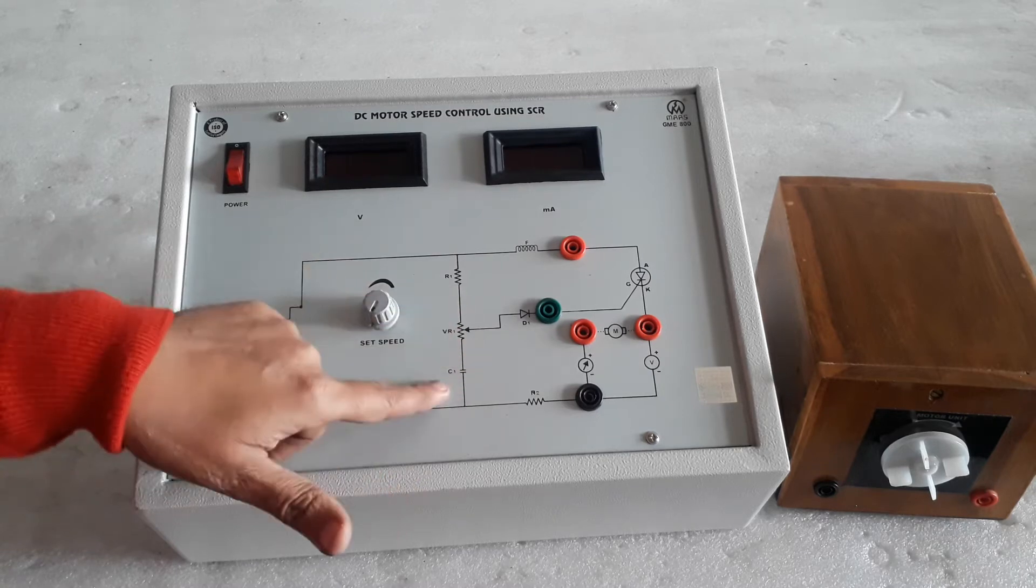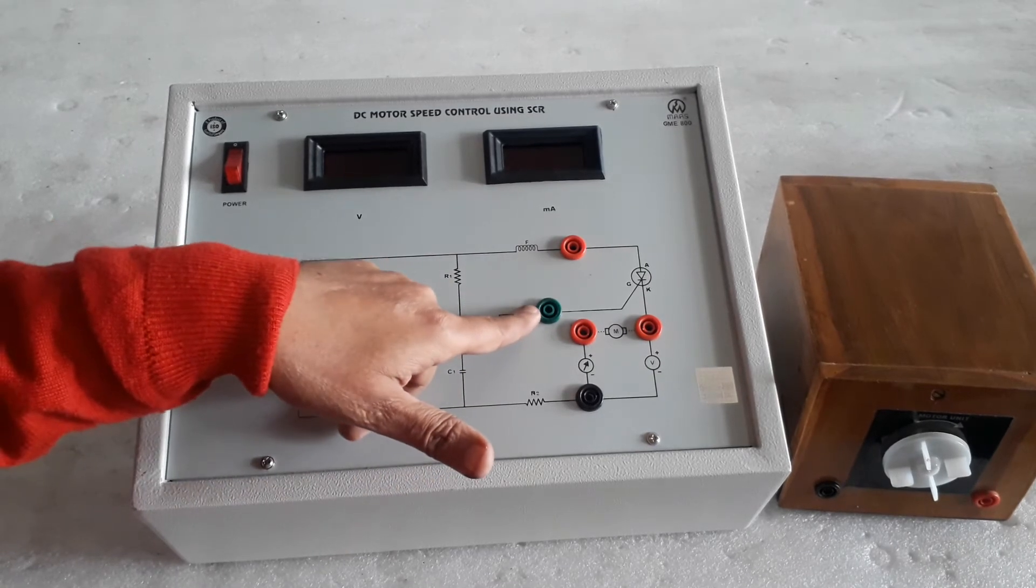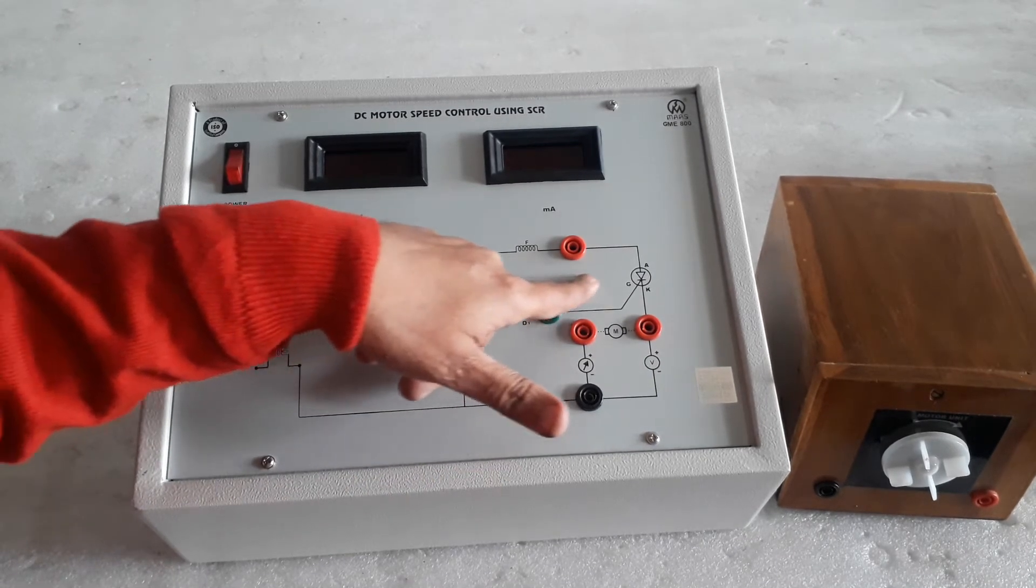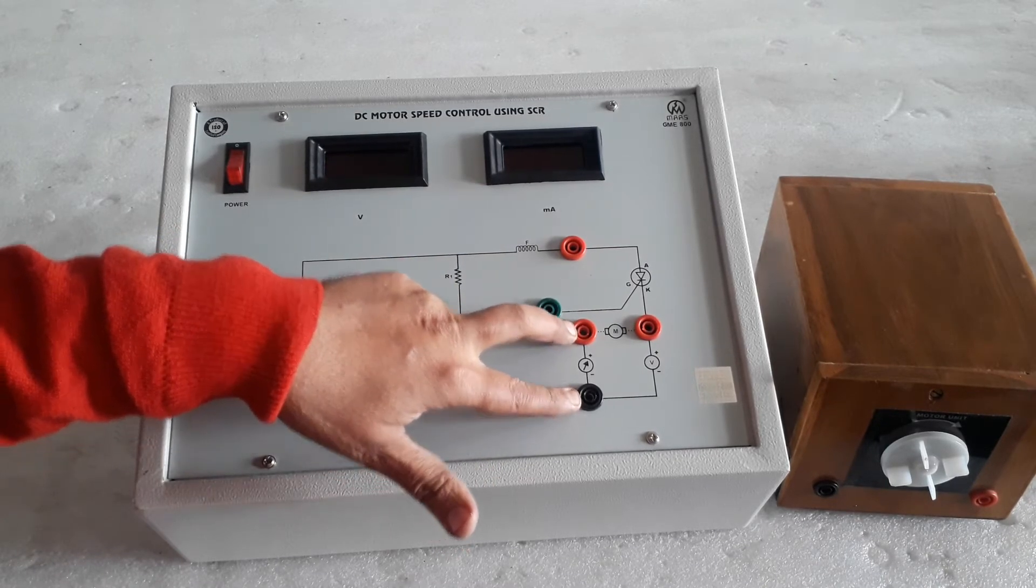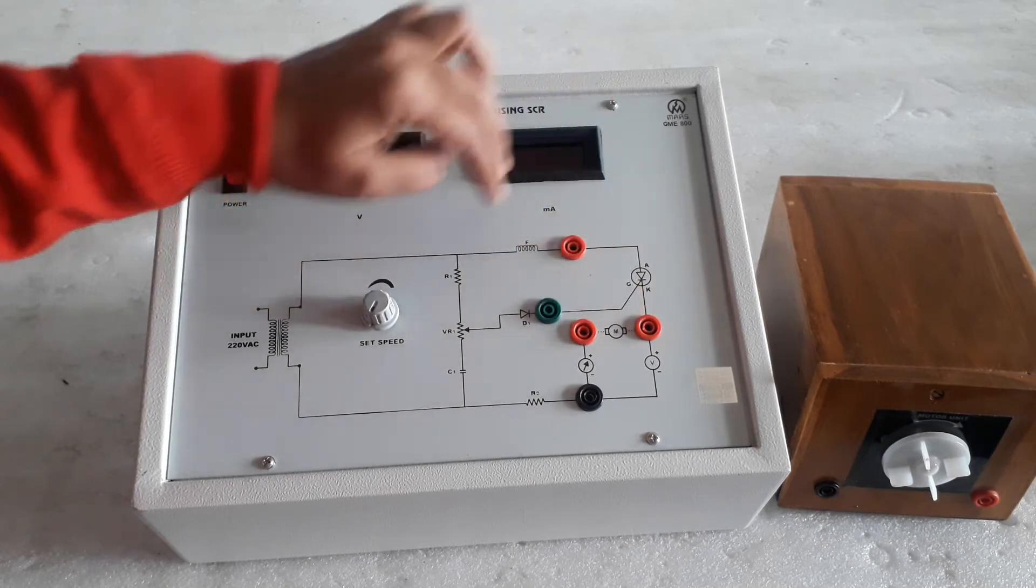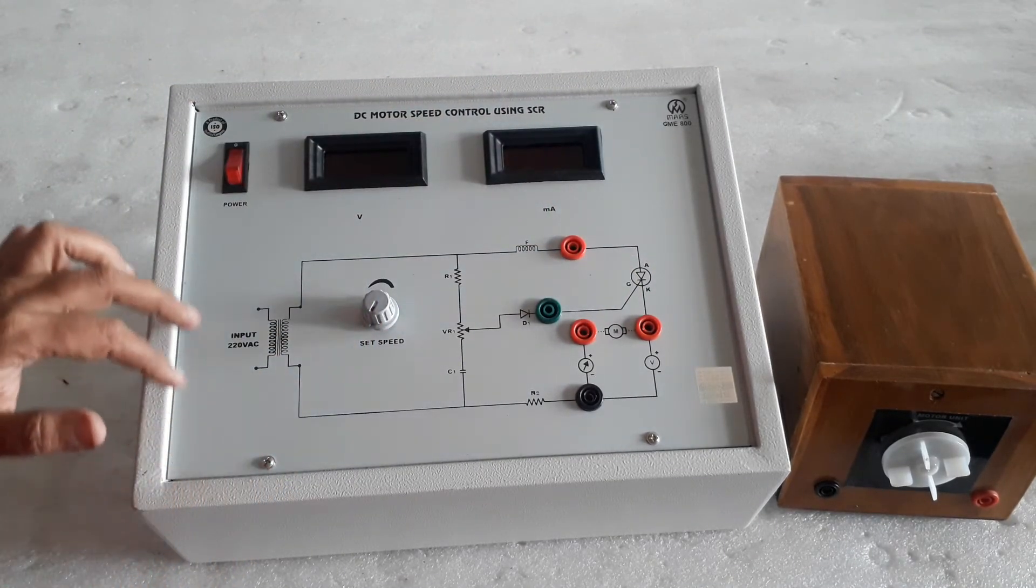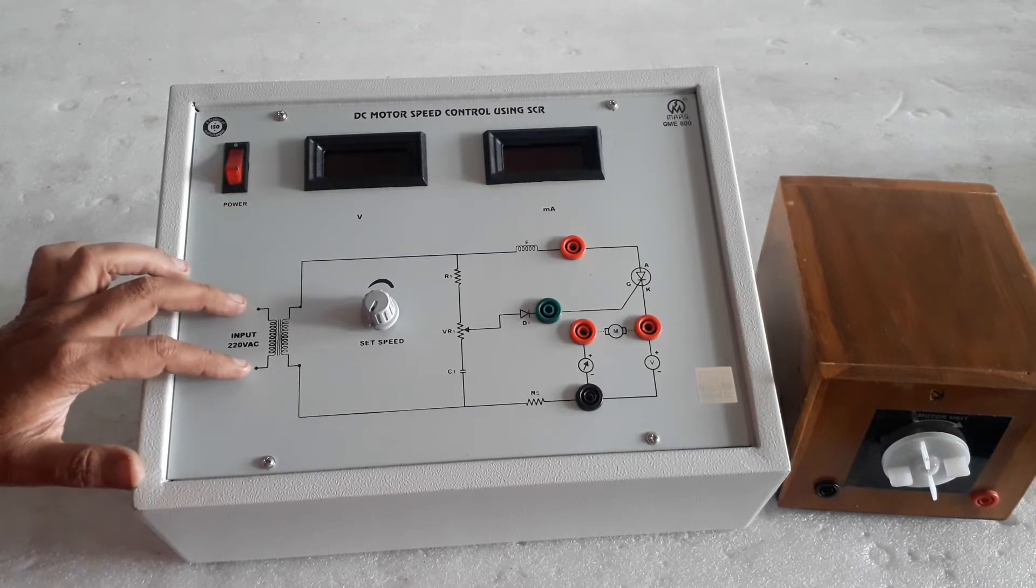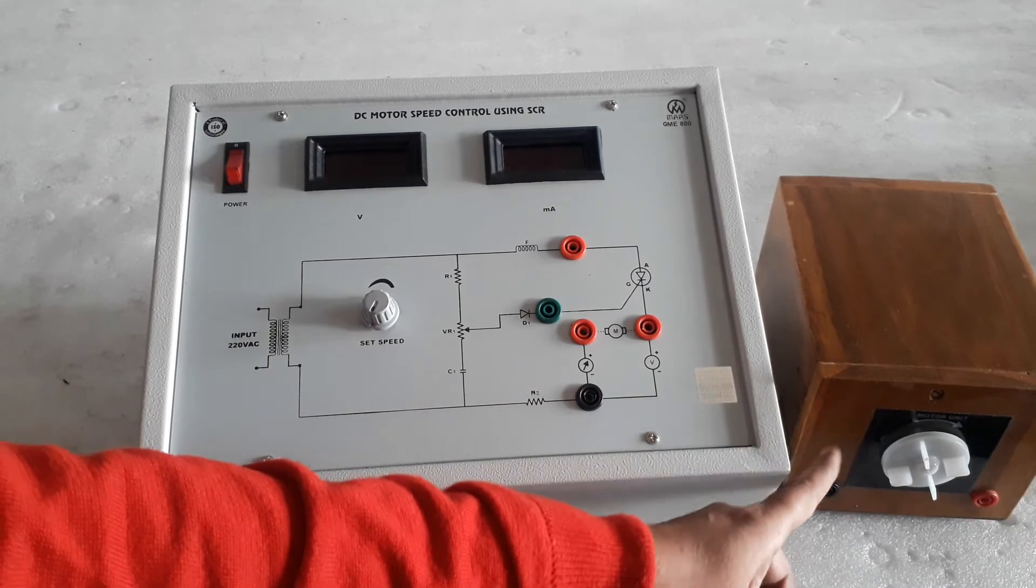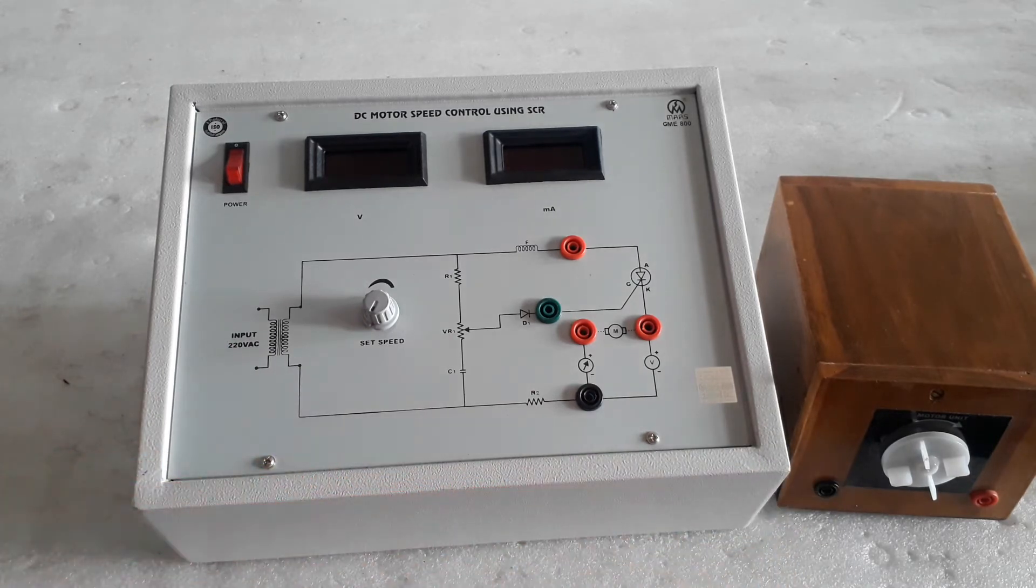And this is the circuit of the SCR. Here is the current meter and the red terminal of the motor. Here is the input 220 volt inbuilt AC supply. Here is the DC motor with wooden box unit.